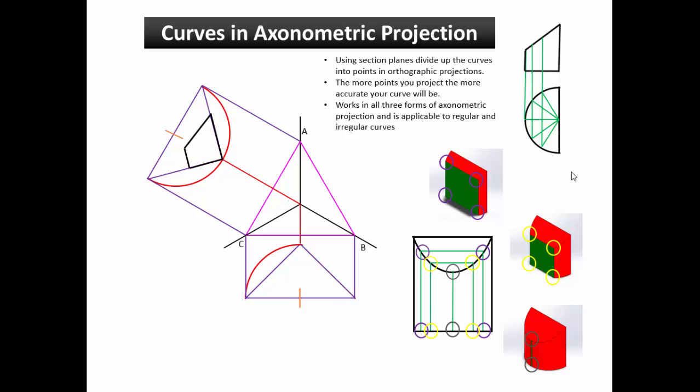Next, create your axis and orthographics in their respective places. Divide up the views exactly like in the first orthographics. From here on out it is the same as any other axonometric projection. Simply project points one at a time to construct your pictorial.